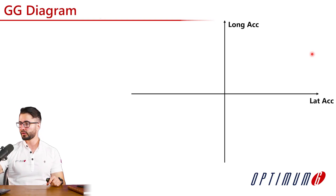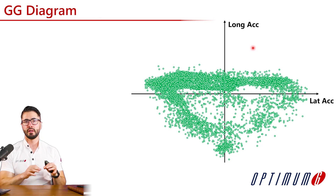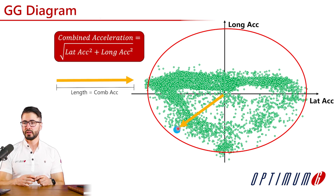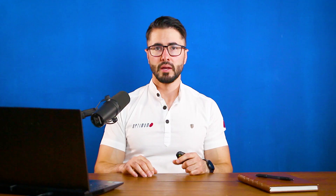For that, we are going to use the GG diagram. In the GG diagram, instead of looking at lateral forces and longitudinal forces, we are looking at lateral acceleration versus longitudinal acceleration. This is real data from a car, so you can understand all the combinations of lateral and longitudinal acceleration. Now we start trying to quantify this using a combined acceleration channel. At any given point, the combined acceleration is exactly the length of the vector — the vector sum of lateral acceleration and longitudinal acceleration. And we are going to see why this vector length is so important.